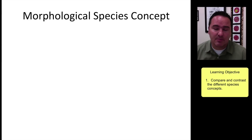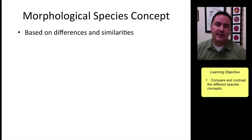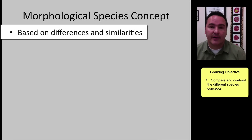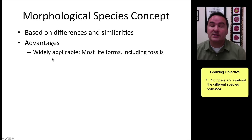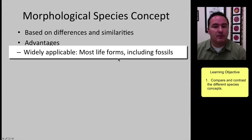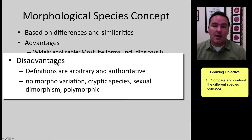Another species concept is the morphological species concept, which has been in play for many years. It is simply based on the differences and similarities of organisms. The advantage is that it is widely applicable — almost all forms of life, including fossils, can be examined under this species concept.